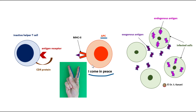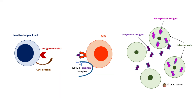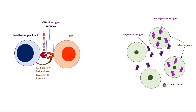The complex we are focused on in this video is referred to as the MHC-2 antigen complex. After the antigen-presenting cell builds the MHC-2 antigen complex, it travels through lymph or bloodstream to reach the inactive helper T-cells and presents the complex to them. The inactive helper T-cell reads the complex using its antigen receptor, and the CD4 protein — one of its components — acts like a hook, allowing the helper T-cell to hold on to and read the complex.